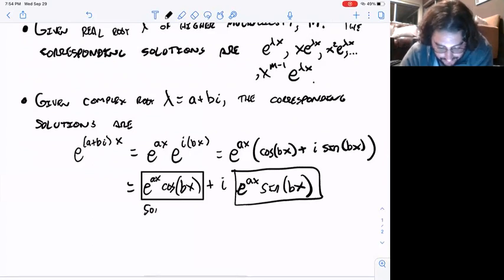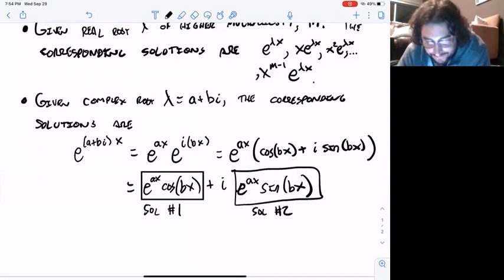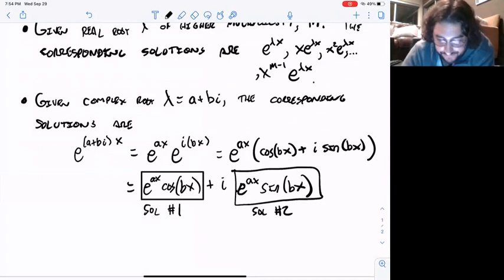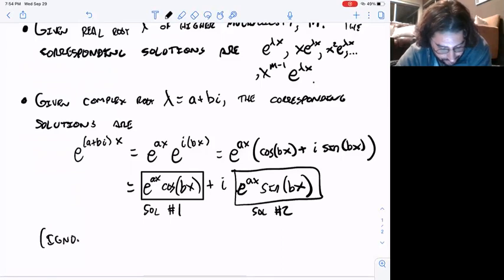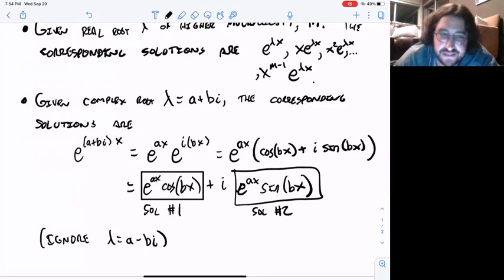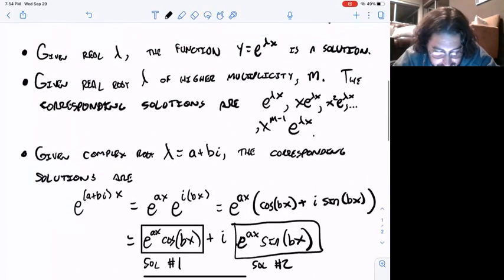And you get two solutions: solution one and solution two. Notice here you'll have a conjugate pair. You can actually ignore lambda equals a - bi. Turns out you can do a similar trick—some identities show that you don't get anything new, you just get the same solutions written in a slightly different form.